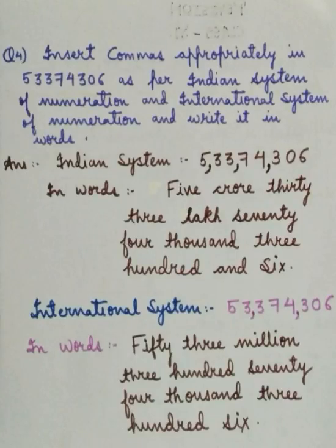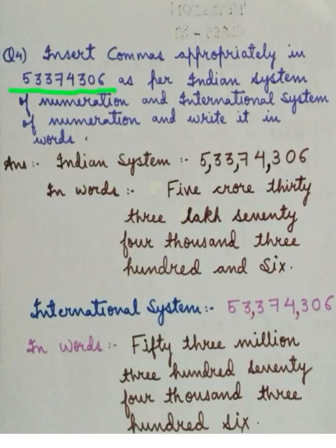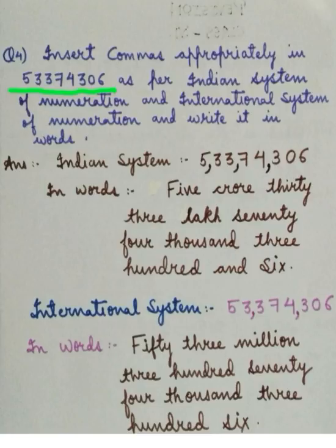Next question: insert commas appropriately in 53374306 as per the Indian system of numeration and international system of numeration, and write it in words. Let's revise both systems. The Indian system of numeration has four periods: ones period, thousands period, lakhs period, and crores period. The ones period contains three digits — ones, tens, and hundreds.